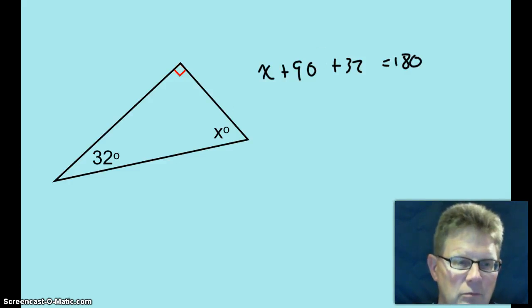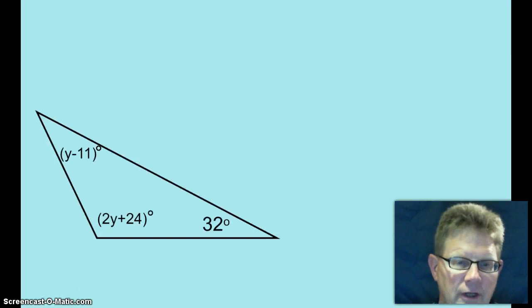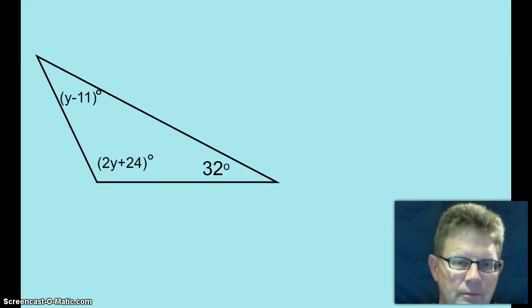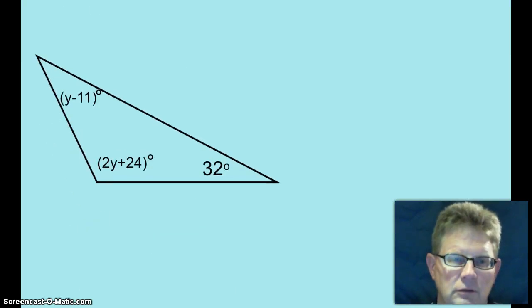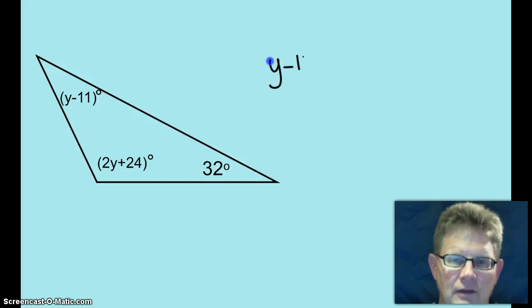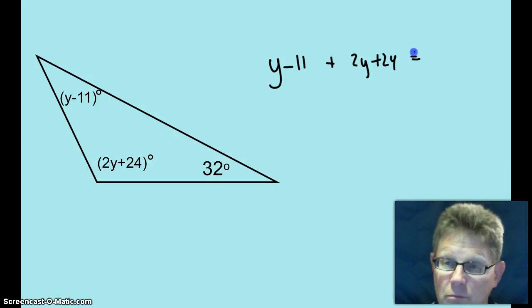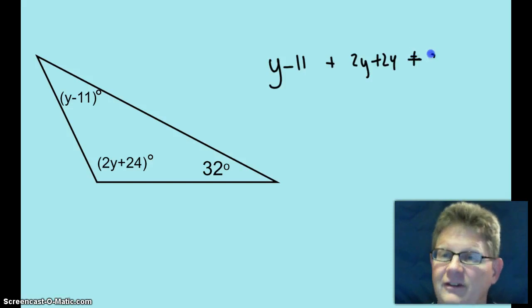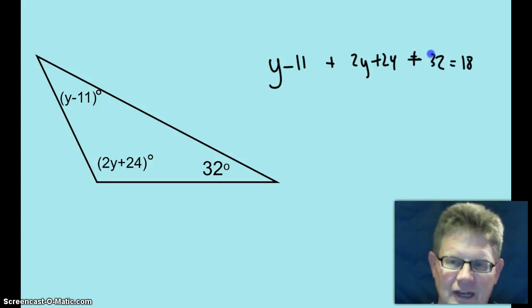Let's go ahead and move on to the next triangle. What's your equation? y minus 11, plus 2y plus 24, plus 32 equals 180.